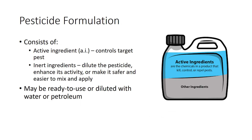Pesticides are available in many different formulations, including liquids, dusts, granules, and baits. A pesticide formulation consists of the active ingredient (AI) that controls the target pest, and the inactive or inert ingredients added to the product. The inert ingredients dilute the pesticide, enhance its activity, or make it safer and easier to mix and apply. Some formulations are ready to use; others must be further diluted with water or a petroleum-based solvent. When more than one formulation is available, consider how the formulation may affect the host plant, people, non-target organisms, and the environment.